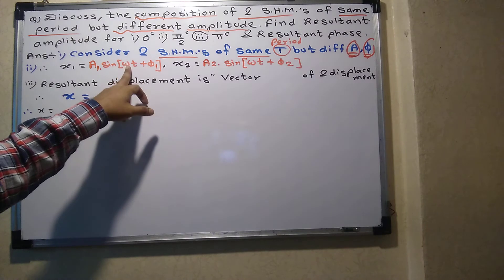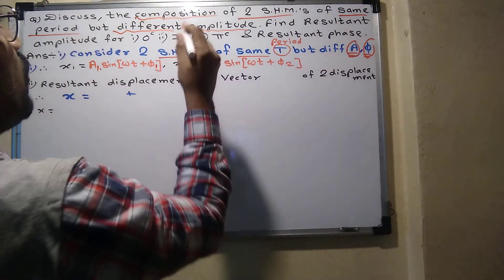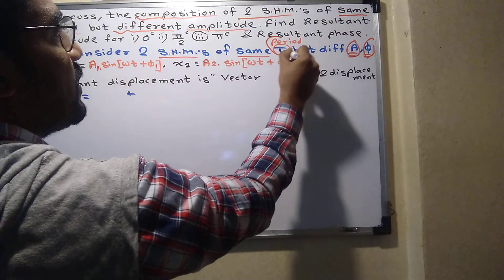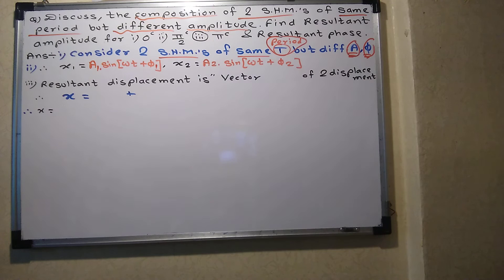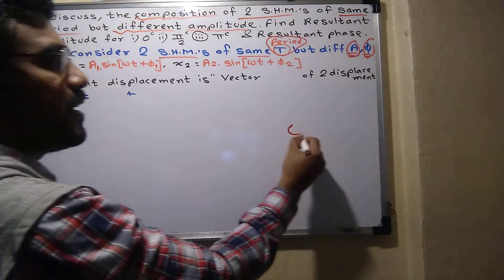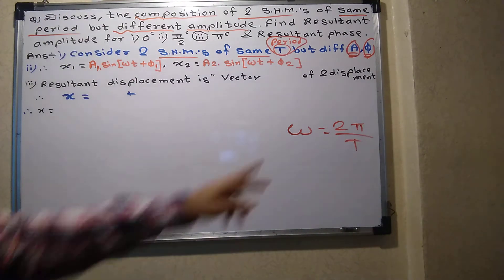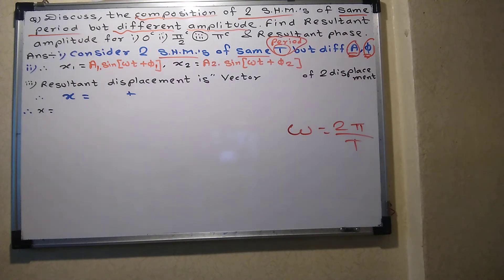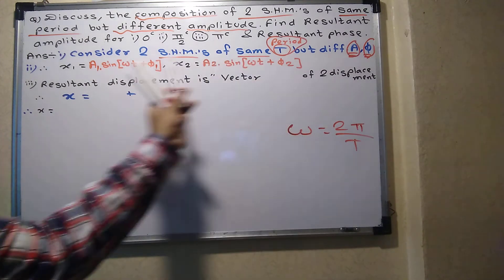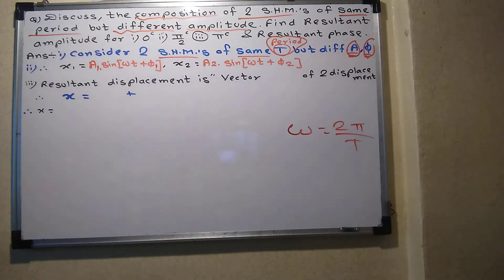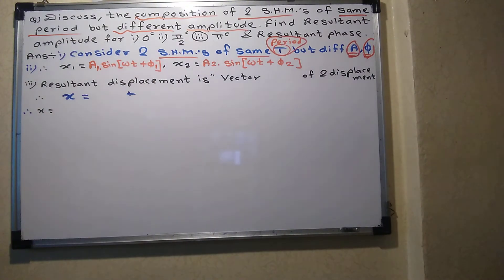Students are asking why I didn't write ω1 and ω2. As I told you, both SHMs have the same period. If the period is the same, the angular velocity will also be the same, because ω = 2π/T. So don't put suffix ω1 and ω2. In exams, most students write ω1 and ω2, which makes the answer wrong. The reason is the same period.